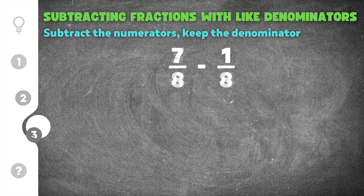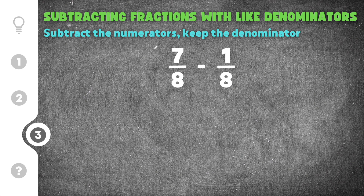Finally, our last practice problem gives us 7 eighths minus 1 eighth. Again, when we're subtracting fractions with like denominators, we go ahead and subtract the numerators. So we do 7 minus 1 and keep the denominator the same. In this case, the denominator is 8. So we do 7 minus 1, which is 6, and the denominator stays 8.